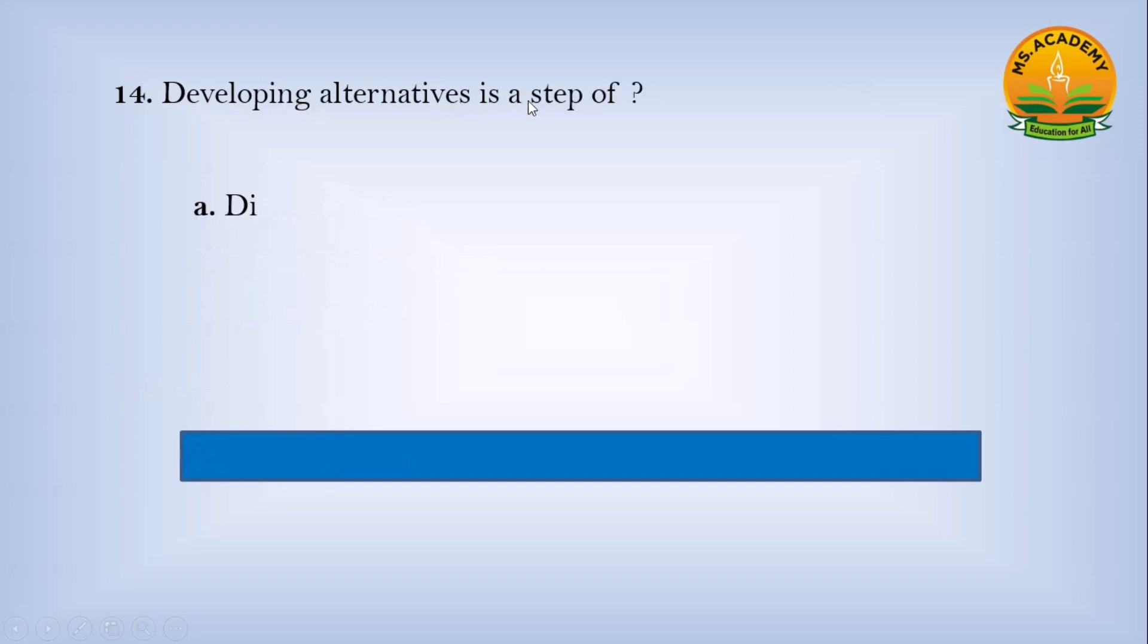Developing alternatives is a step of: Option a) Direction, Option b) Organization, Option c) Planning. Answer: c - Planning.